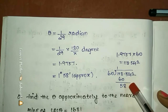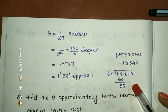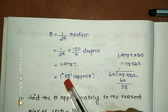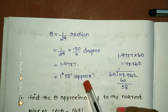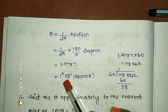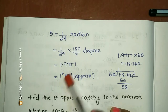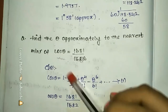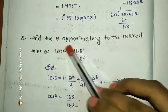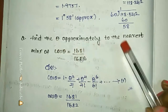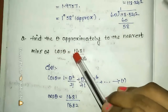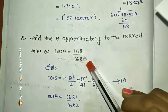So minus gives 58. From the decimal point, the result is approximately 1 degree 58 minutes. Now let's prove the values. Find theta approximately to the nearest minutes where cos theta equals 1681 divided by 1682.